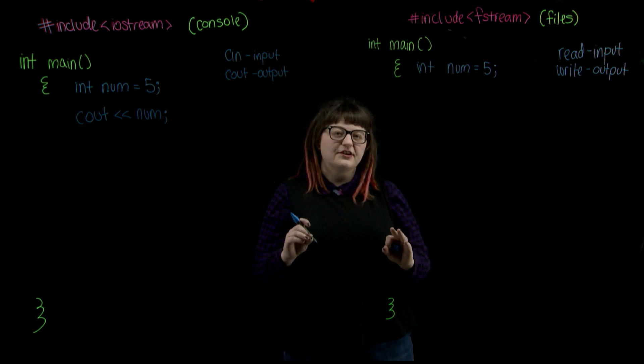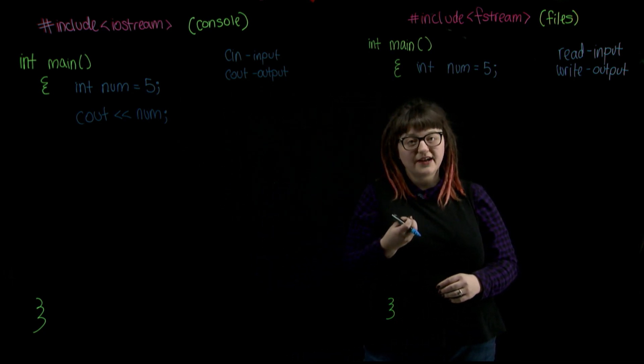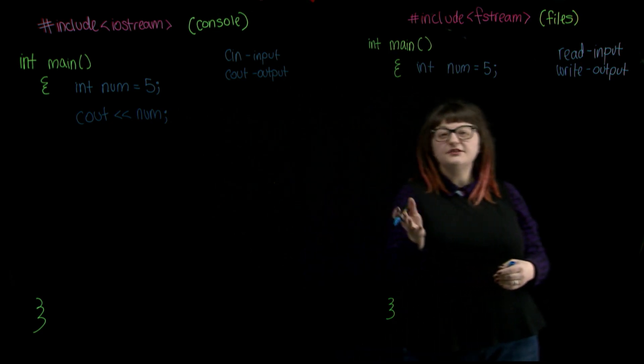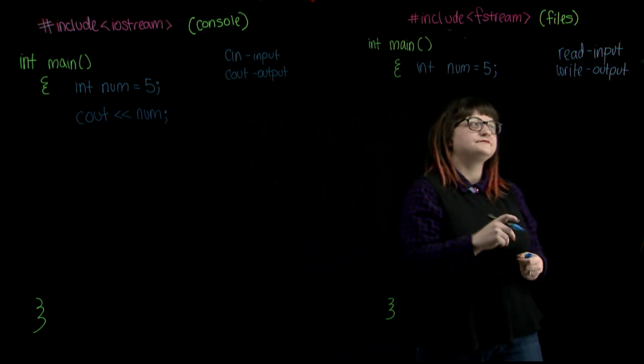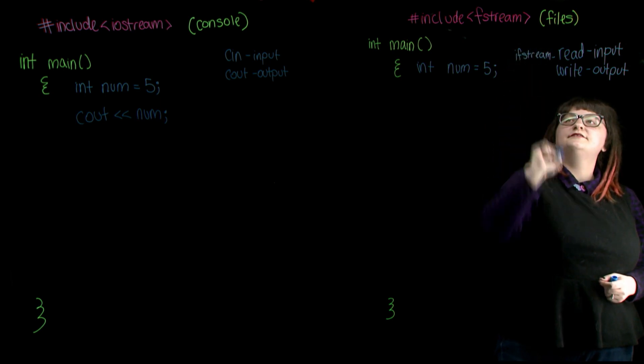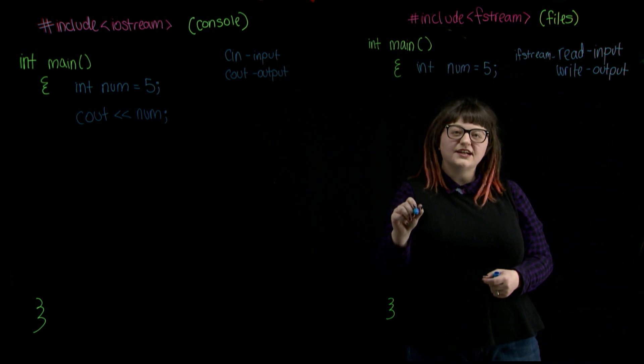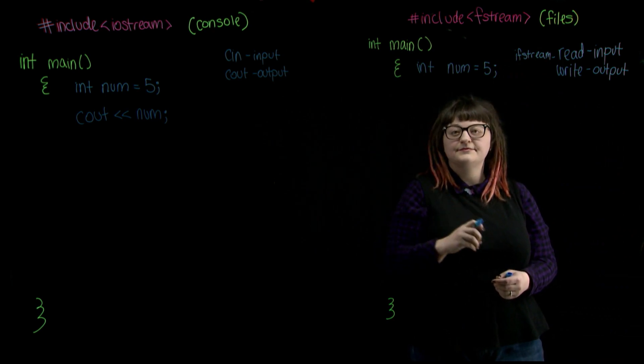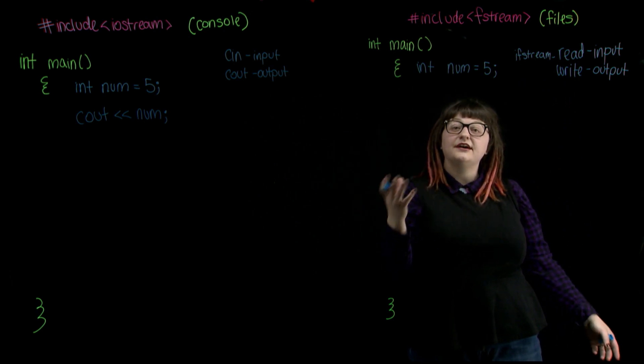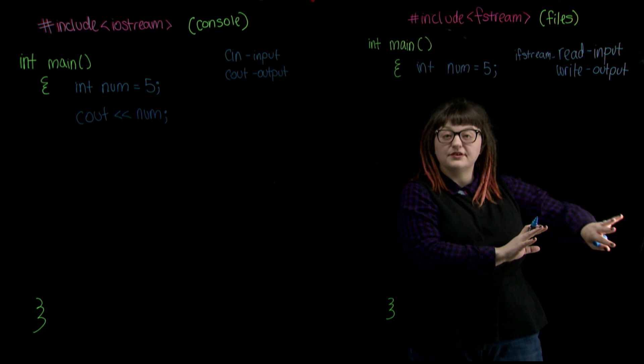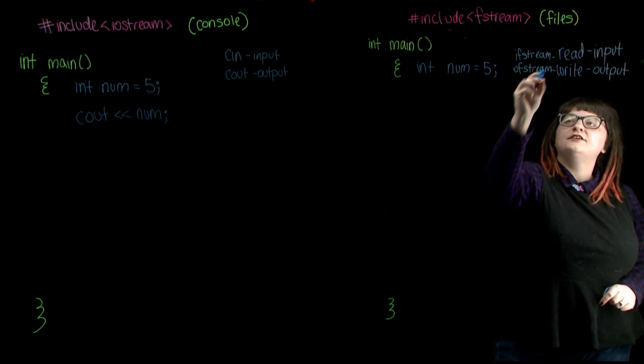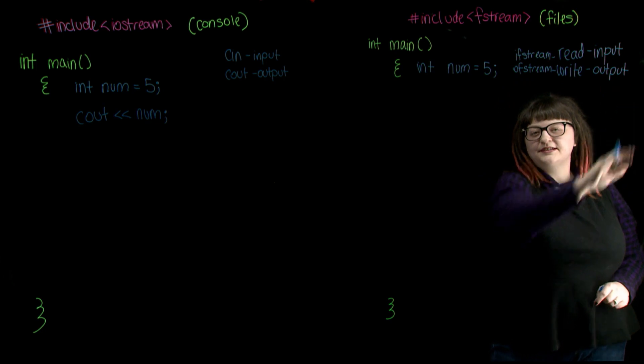Now, the data type that we use for our file object is going to determine if we are reading data from the file or writing data to it. The first file data type is going to be ifstream, and that's used to identify input file objects. A file object that we want to read and get our input from. I for ifstream. Our other file object is the data type ofstream, and this is going to allow for us to have output to our file object. In this case, it's going to be O for ofstream, O for output. It's a nice easy way to remember it.